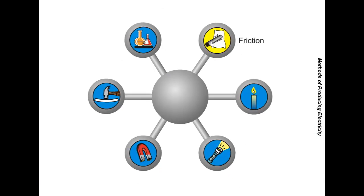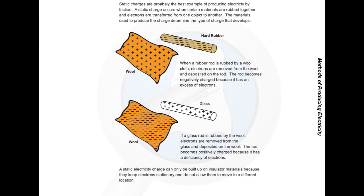Friction. Static charges are probably the best example of producing electricity by friction. A static charge occurs when certain materials are rubbed together and electrons are transferred from one object to another. The materials used to produce the charge determine the type of charge that develops.